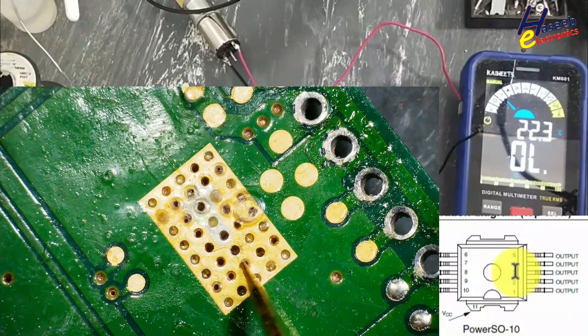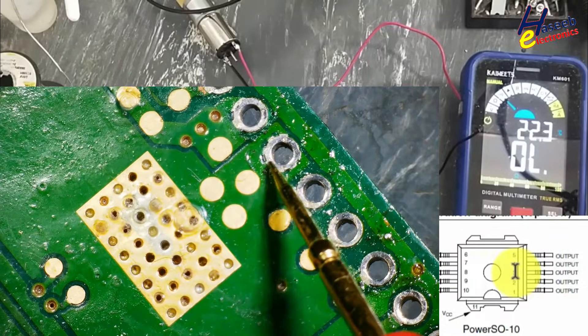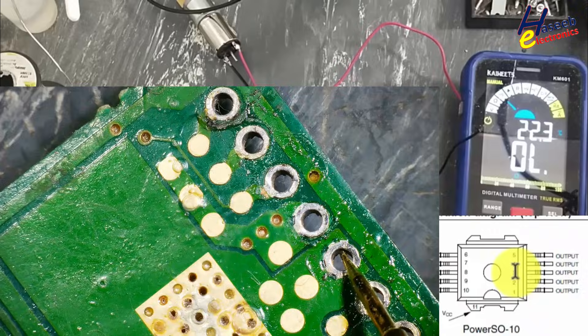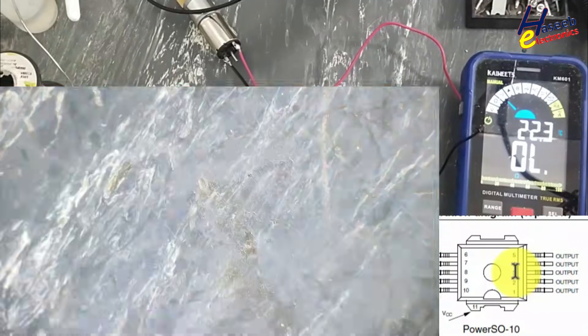Here is the heatsink tab and it is connected to this pin, that is pin number 5. So in this way we can trace the inputs and outputs.